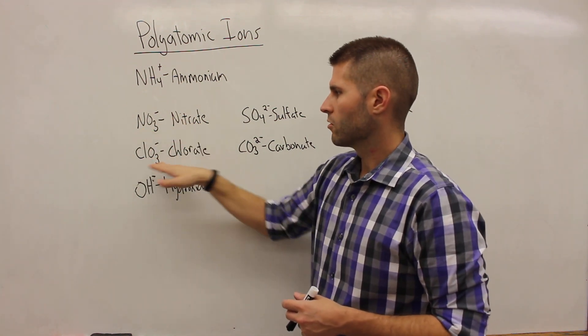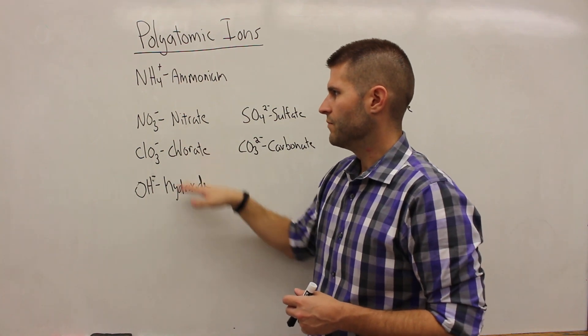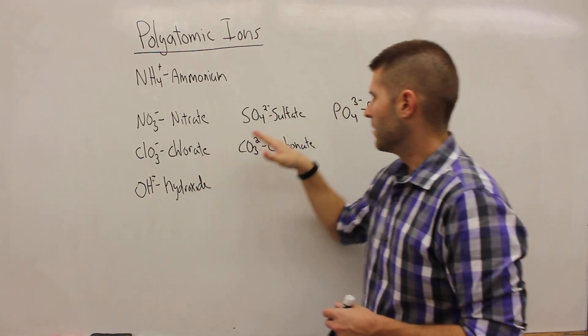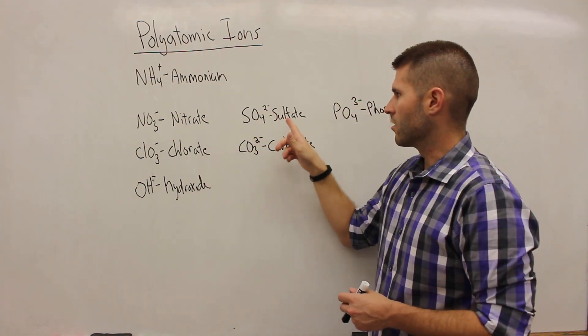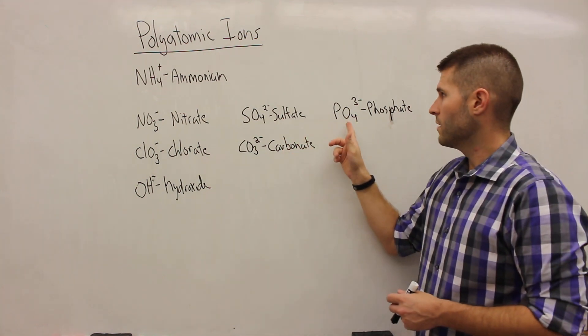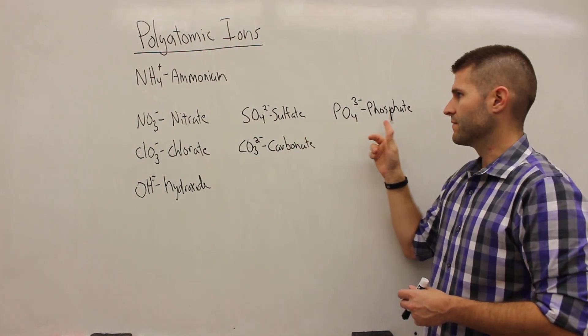So we have nitrate, chlorate, and hydroxide. These are our minus one polyatomic anions. Our minus two polyatomic anions are sulfate and carbonate. And then we only have one minus three polyatomic ion, and that is phosphate.